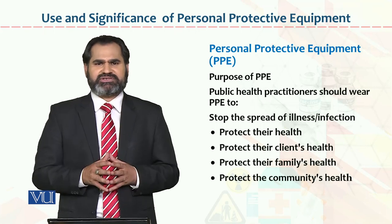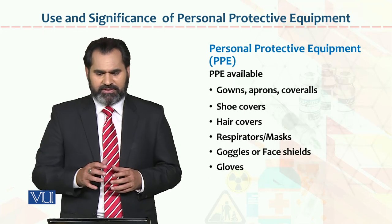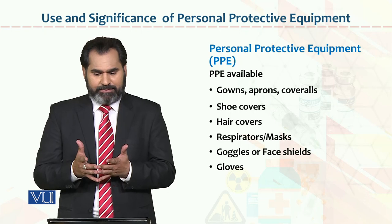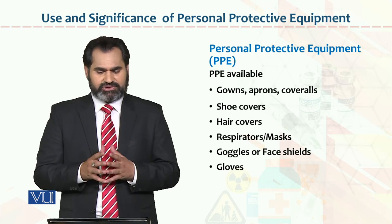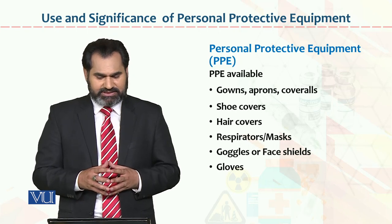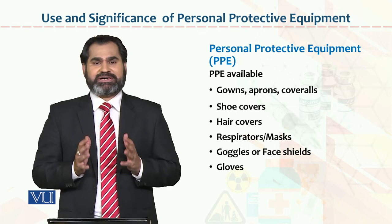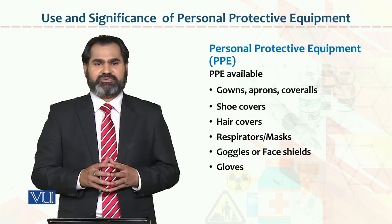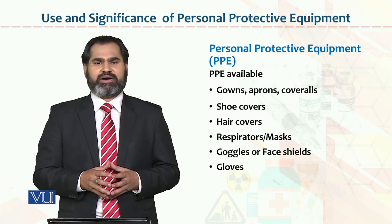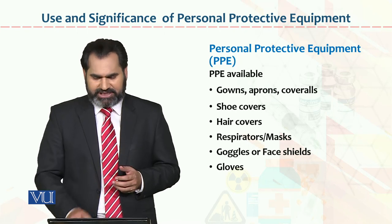Students, look at your surroundings — in developed countries, people wear yellow-colored visible safety jackets. If you are boating, you wear life jackets. Personal protective equipment can protect you from different kinds of dangers. PPE available includes gowns, aprons, covers, shoe covers, hair covers, respirator masks, goggles, face shields, and gloves. These are different examples that, under personal protective equipment, we can use to protect our health and the health of those around us from infectious material or any kind of injury.